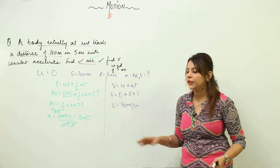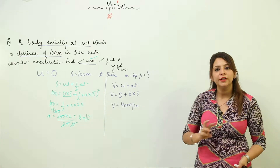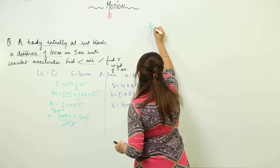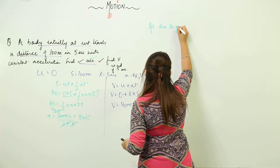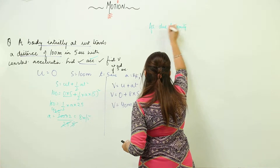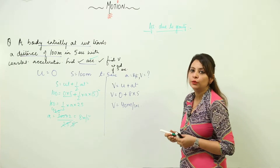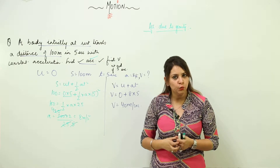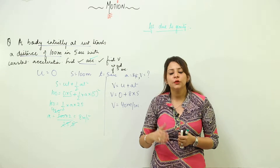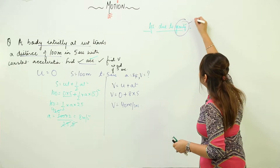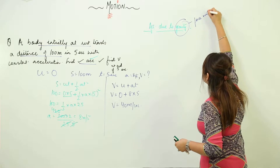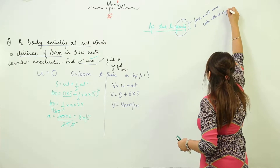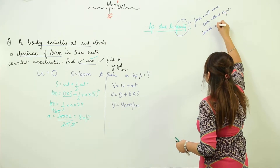It's clear how to solve questions based on the three equations of motion. Now we are going to start with another type of acceleration — that is acceleration due to gravity. Gravity is a force with which the earth attracts objects towards itself.